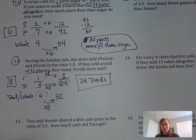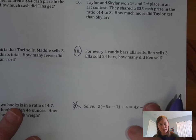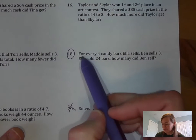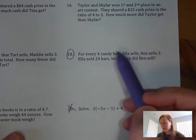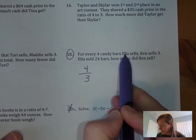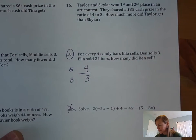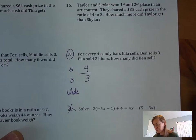Let's take a look at number 18, which is just a little bit different. Let's go ahead and read it. For every 4 candy bars Ella sells, Ben sells 3. It looks like our ratio is 4 to 3, so 4 to 3, and that's Ella to Ben. Let's go ahead and put a little column here for whole as well.